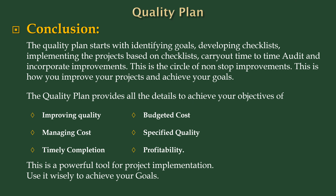Conclusion. The quality plan starts with identifying goals, developing checklists, implementing the project based on checklists, carrying out time-to-time audits, and incorporating improvements. This is the circle of non-stop improvements, and this is how you improve your projects and achieve your goals.